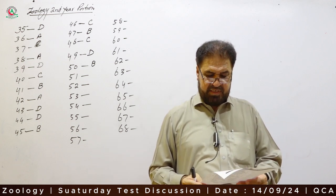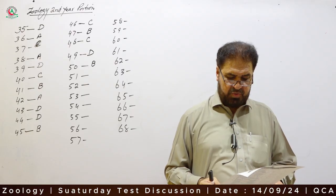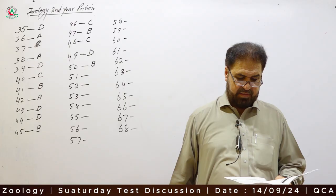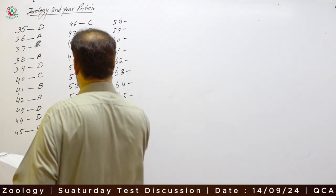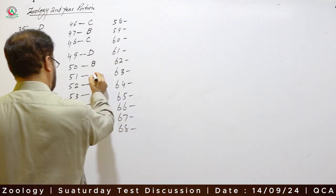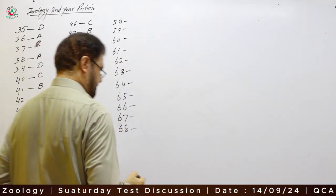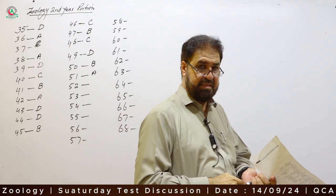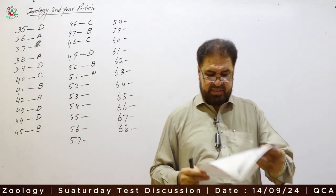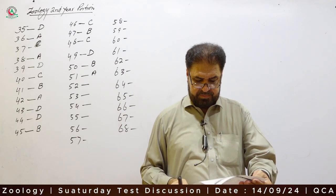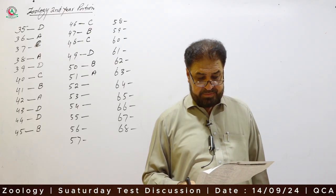Question 51: The synaptic cleft in electrical synapses is 0.2 nanometers. The correct option is A. Electrical synapses transmit rapid information and are only found in cardiac muscles.